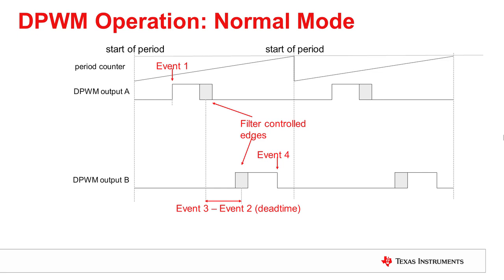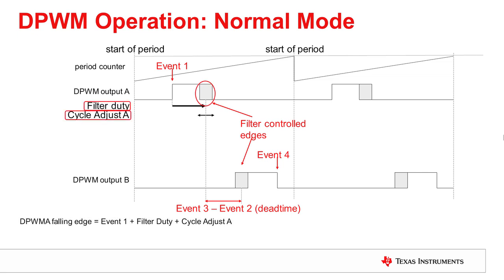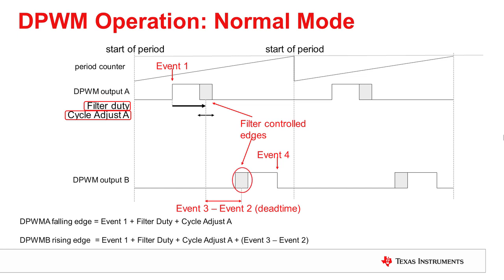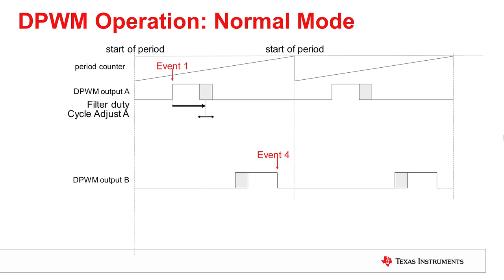The dead time between output A and output B is controlled by subtracting the value in the event 2 register from the value in the event 3 register. More specifically, the falling edge of DPWM output A is controlled by both the filter duty value and the value in a register called CycleAdjustA. CycleAdjustA can be used to adjust pulse widths on individual phases of a multi-phase system. So the falling edge of DPWM A is set by event 1 plus the filter duty plus CycleAdjustA. DPWM B's rising edge is then equal to this value plus the dead time.